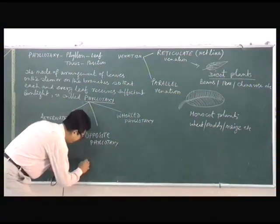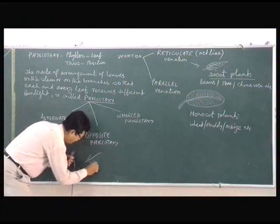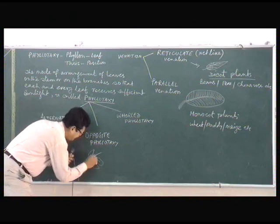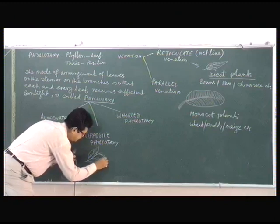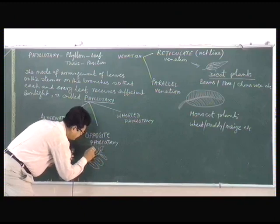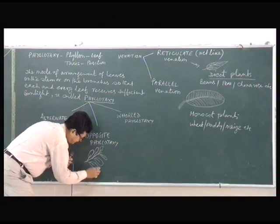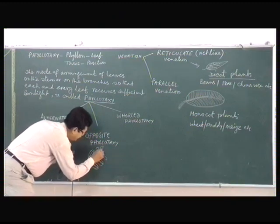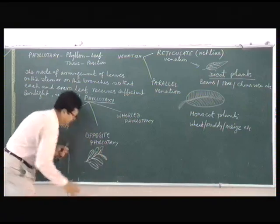In opposite phyllotaxy, we have a pair of leaves growing from the same node. The best example is guava. When a pair of leaves grow from the same node, we call it opposite phyllotaxy.